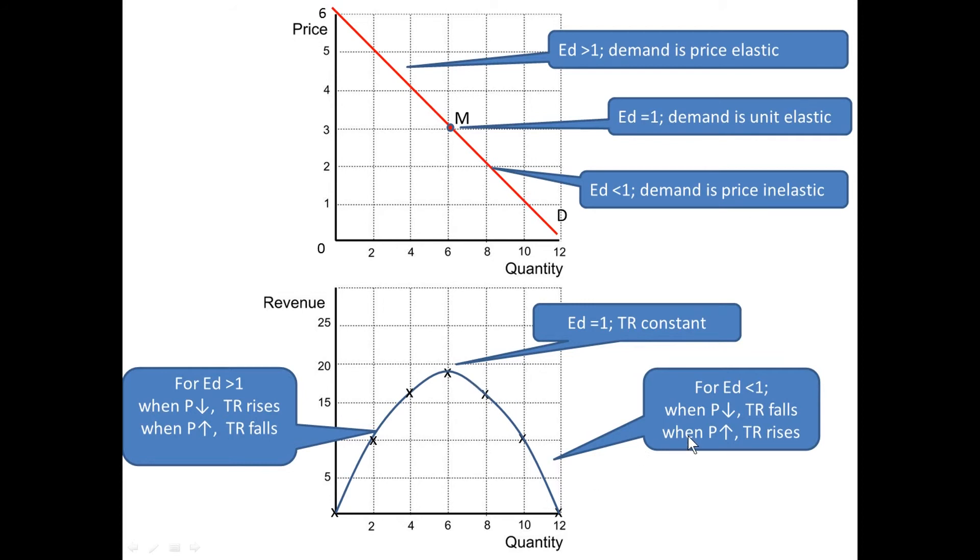When price rises, on the other hand, total revenue rises as well. So, when price rises towards M, then total revenue is also rising.